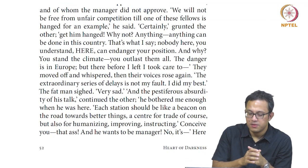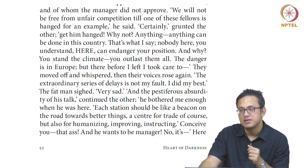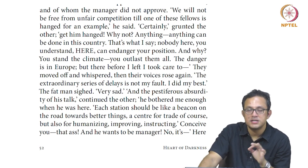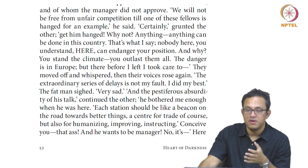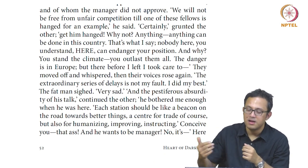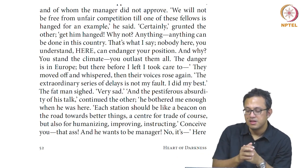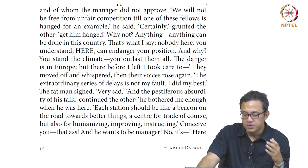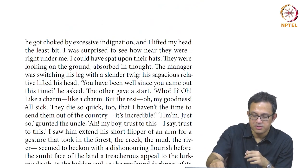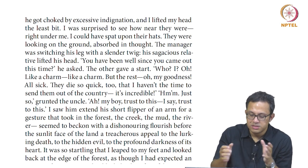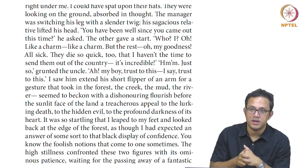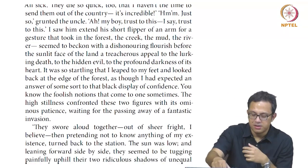The whole idea of stations in imperialism becomes important. Marlow is told each station should be like a beacon on the road towards better things — a centre for trade, but also for humanizing, improving, and instructing. That is the ideal definition of colonial centres — the perfect relay station where things get better between arrival and departure. Heart of Darkness shows how not only the humanizing phase disappears completely, but also the efficiency phase goes away — it becomes inefficient, and that is something the novel constantly foregrounds.